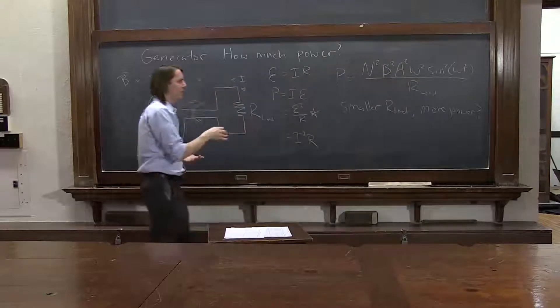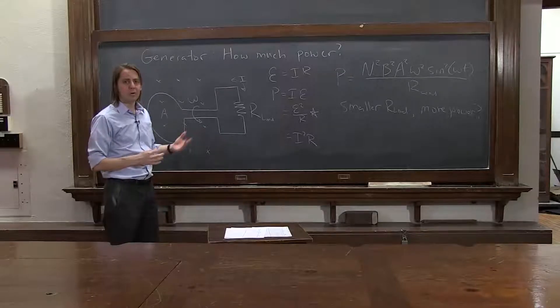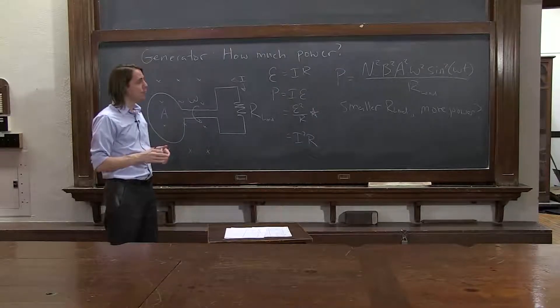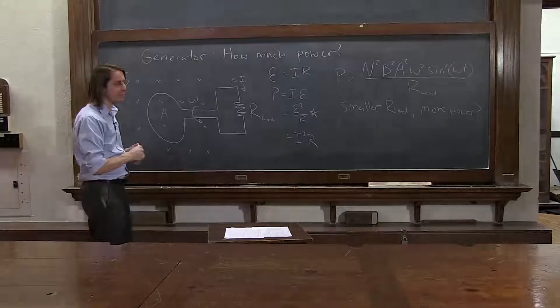So this implies that this thing is just sitting here spinning. It doesn't have a set amount of power it gives out. It's going to depend on the load. And that is actually true. But let's now go back and look at the mechanical thing that's doing the spinning.